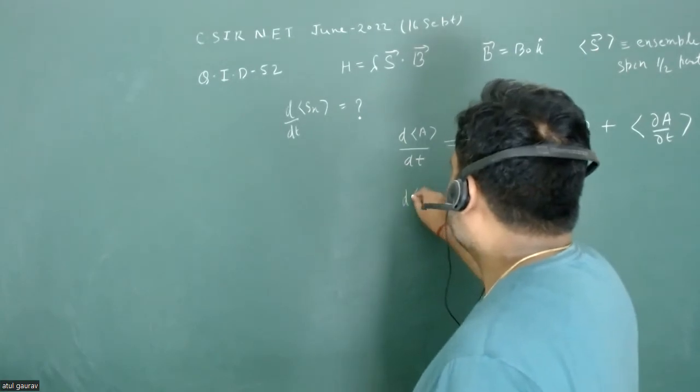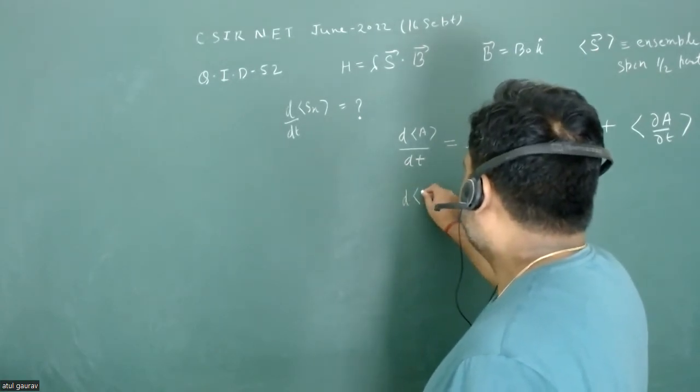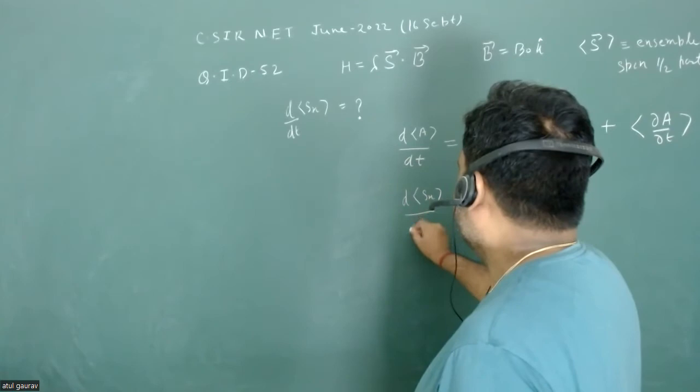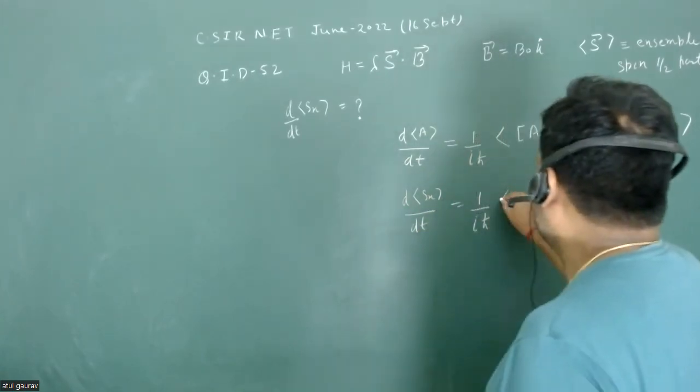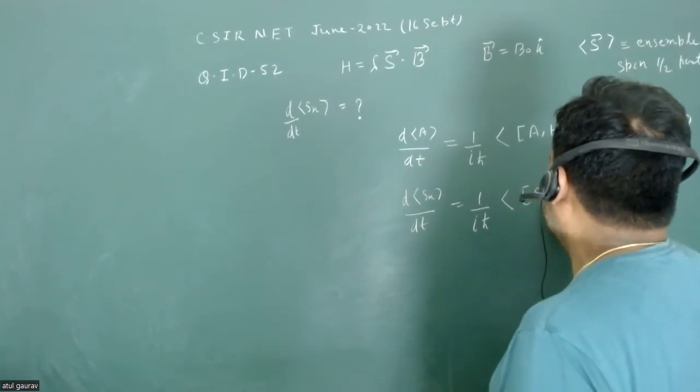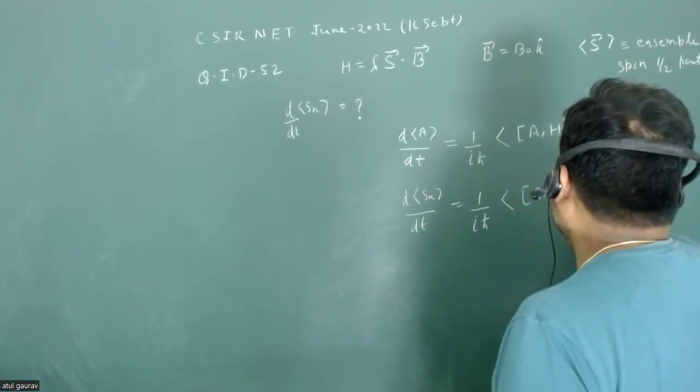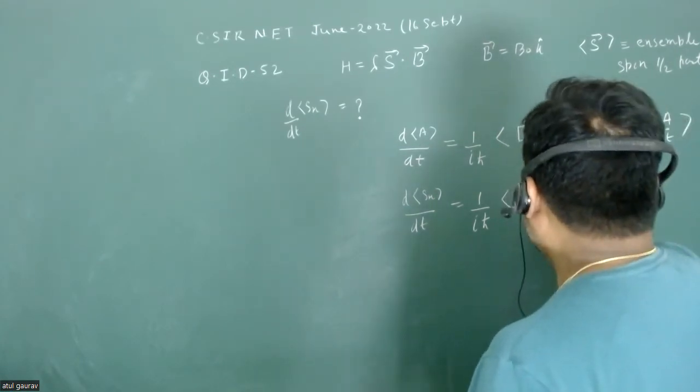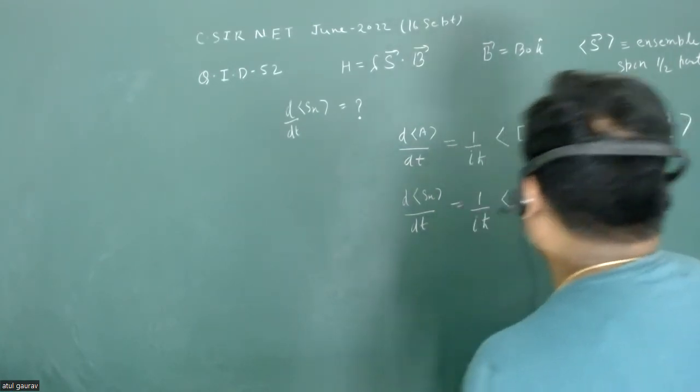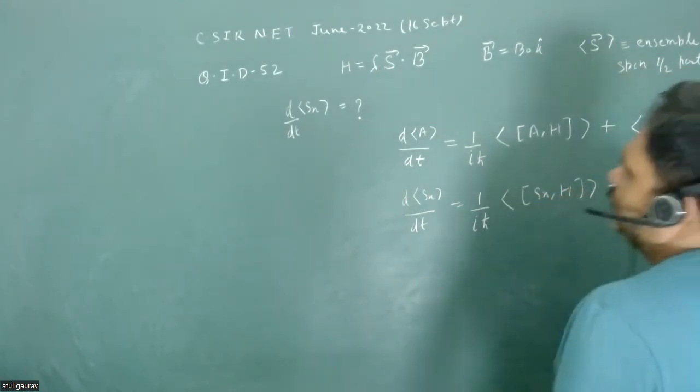So what we have to do is find d sx upon dt, which will equal to 1 upon ih bar times the commutator of sx and h. The whole thing is that we have to calculate the commutator of sx and h.